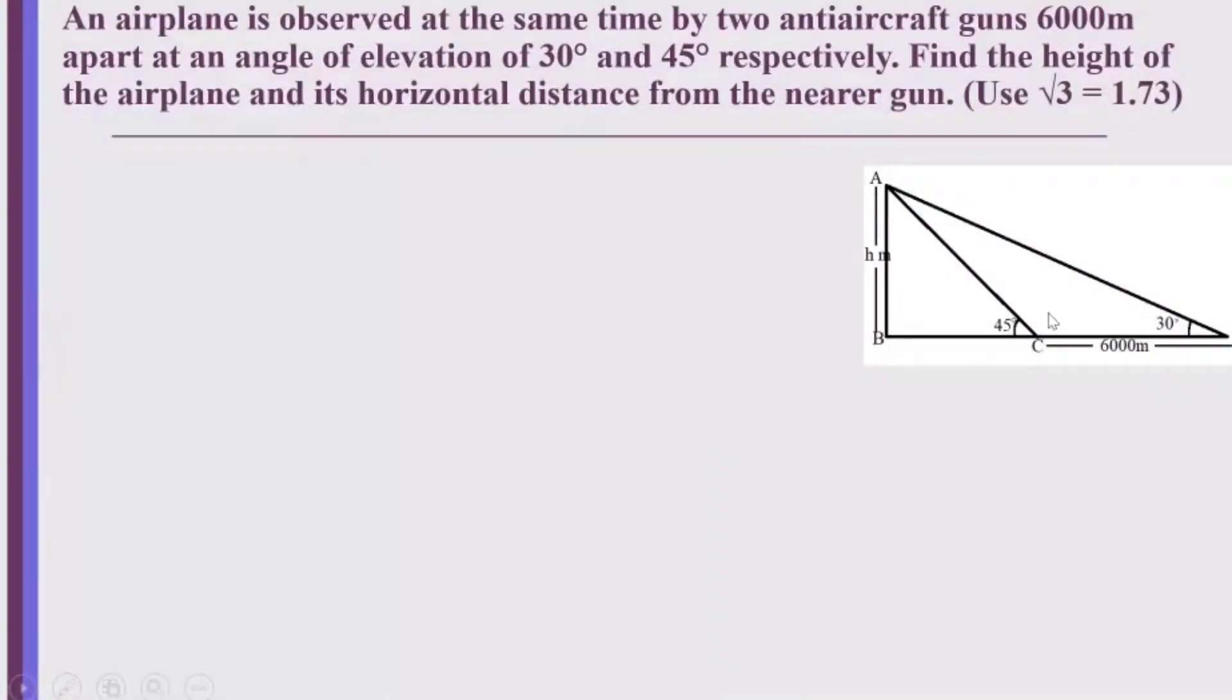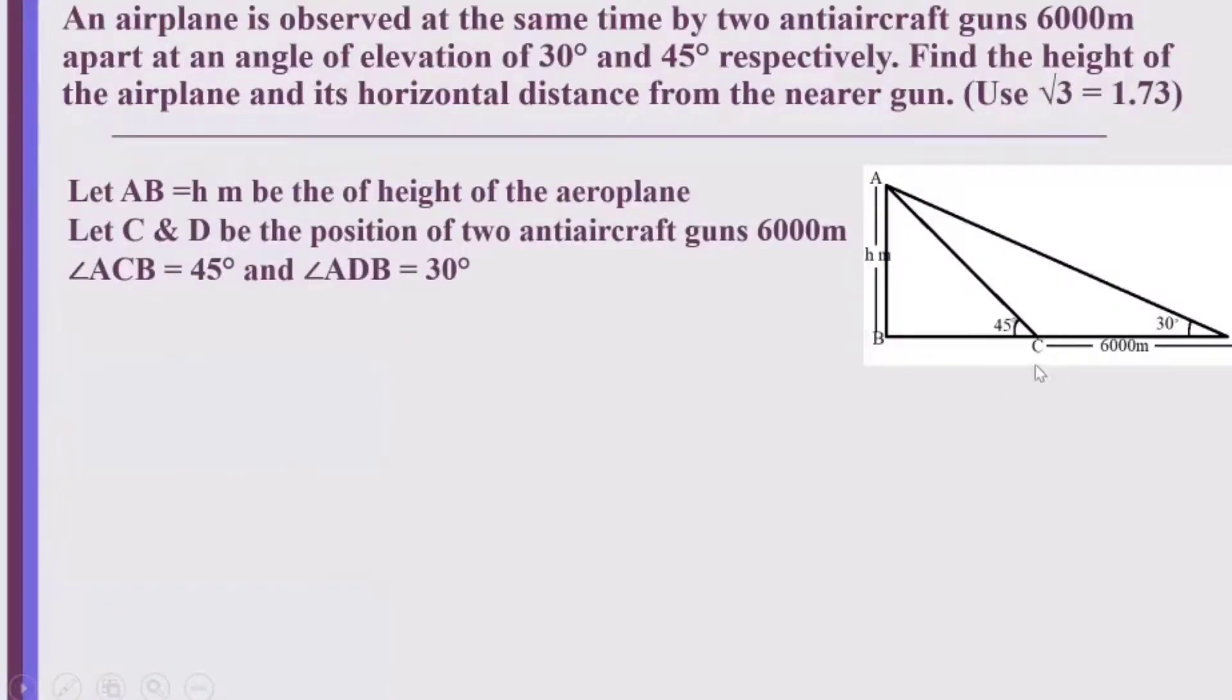First of all, we will be making the figure. What all is given to us? Let AB be the height H of the aeroplane and C and D be the positions of the two anti-aircraft guns which are 6,000 meters apart. Angle ACB is 45 degrees and angle ADB is equal to 30 degrees. We need to find out the height H and the horizontal distance from the nearer gun.